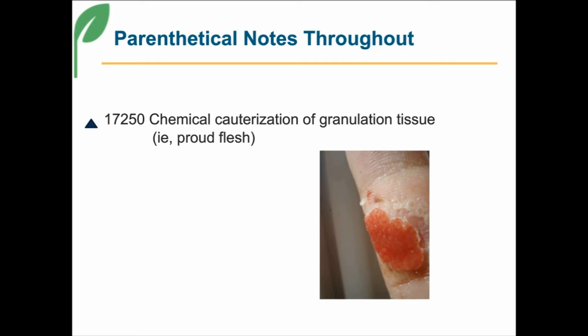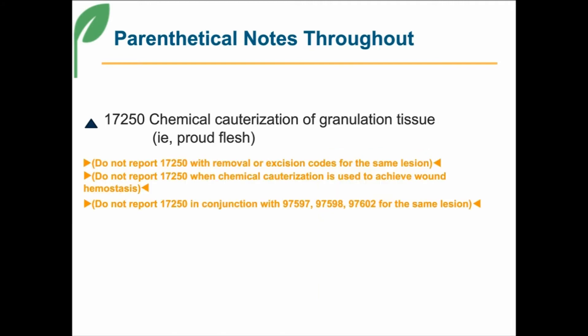So what it's telling me is it's narrowing our use of this code to just overgranulation — too much tissue that you've got to clean up with a chemical cauterization. There are three new parenthetical entries this year, and each of them tells us: don't try to use code 17250 for removal of a lesion — same lesion. They're trying to limit this use to just the chemical cauterization, not a cleanup after they've excised a lesion.